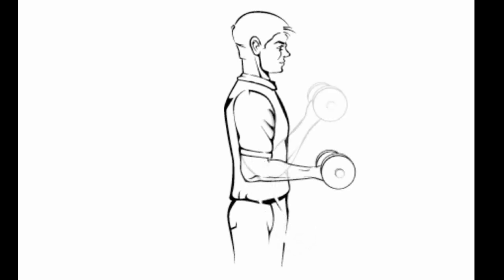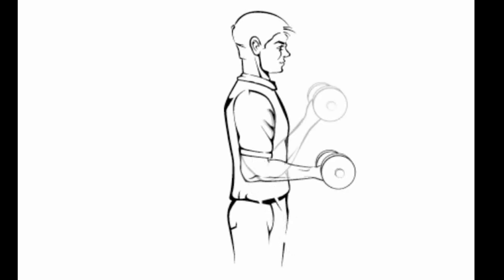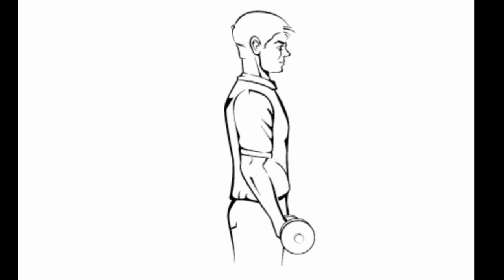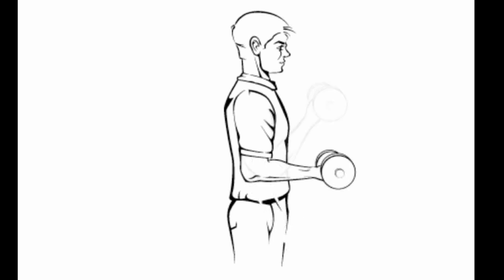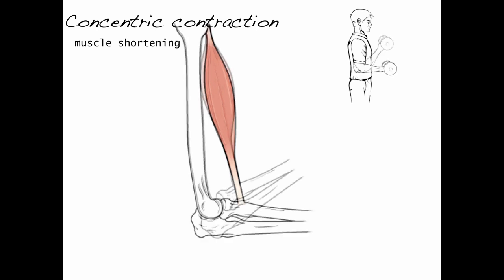Normal human muscle contractions involve shortening and lengthening that are repeated in sequence. Let's first take a look at shortening contractions. Here we can see a bicep curl where the muscle is shortening. We call this a concentric contraction, where the skeletal muscle shortens.